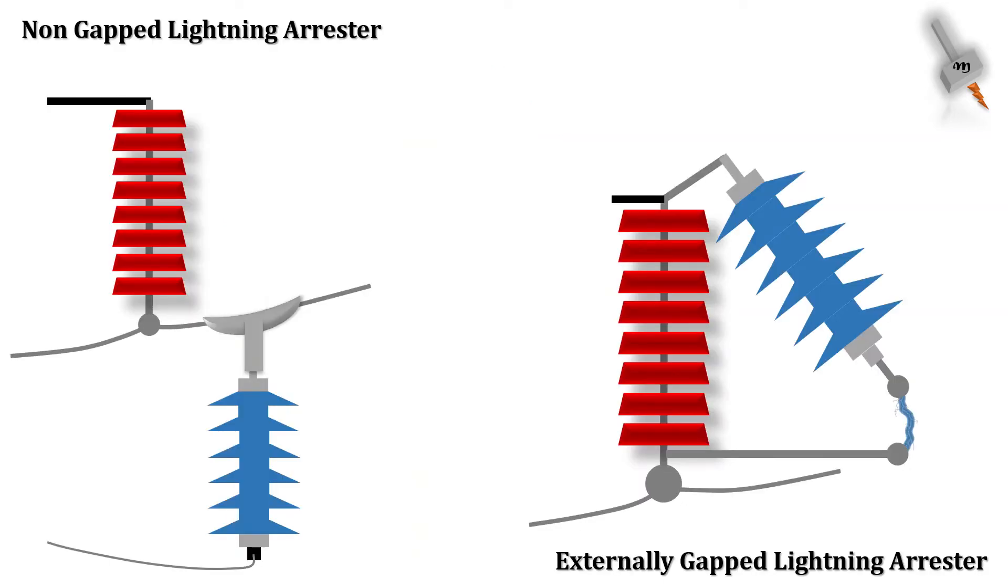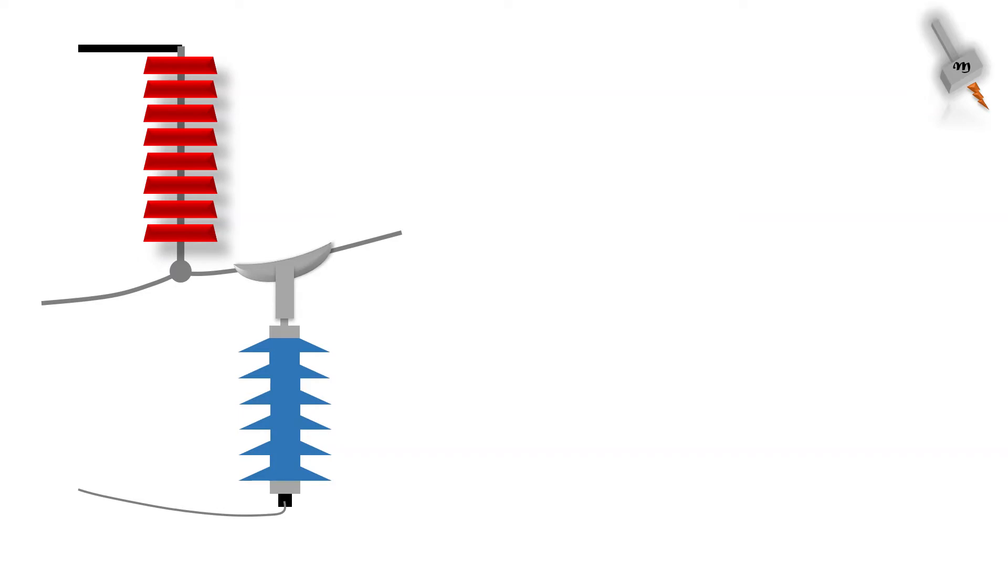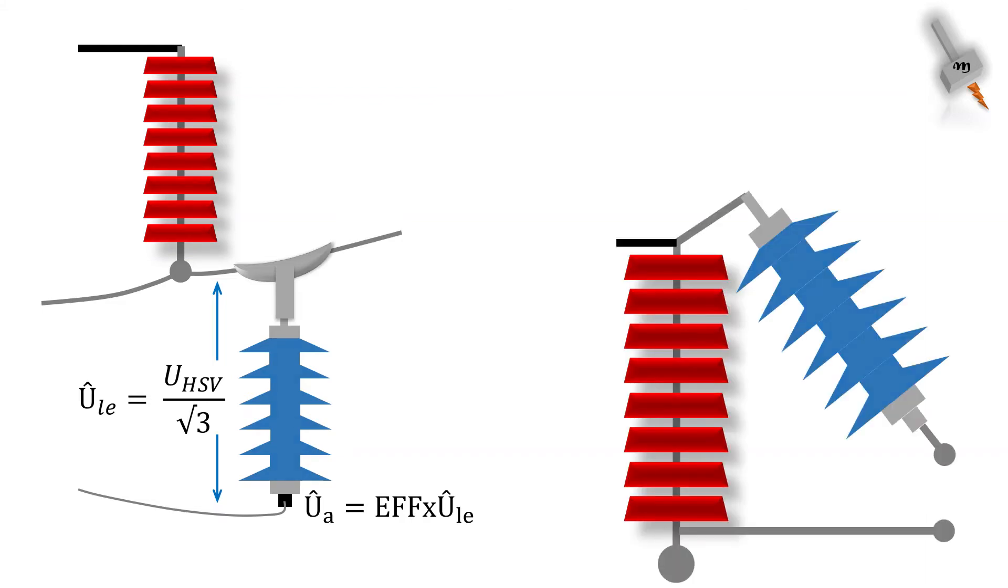Now let's move to see what are the other differences between NGLA and EGLA. For the NGLA, the continuous applied voltage across the arrester terminals is highest system voltage divided by root 3. The rated voltage of the arrester is arc fault factor times the continuous applied voltage. In EGLA, the rated voltage is same as the continuous applied voltage. This is due to the fact that the EGLA is meant to handle the lightning overvoltage and not the switching or power frequency overvoltage.